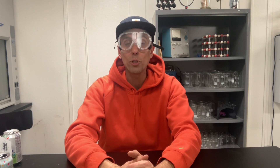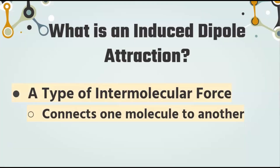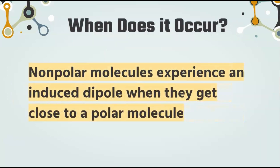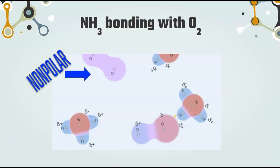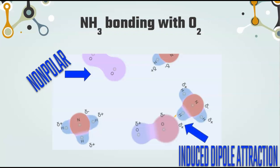Let's summarize what we've learned. An induced dipole attraction is a type of intermolecular force — and remember, intermolecular forces connect one molecule to another. This happens when non-polar molecules get really close to polar molecules. For example, here we see NH3 bonding with O2. When O2 is alone, it's very non-polar with no positive or negatively charged regions. But when close to NH3, it's been persuaded to have a dipole. The small yellow line between the positive end of NH3 and the negative end of O2 represents the induced dipole attraction.